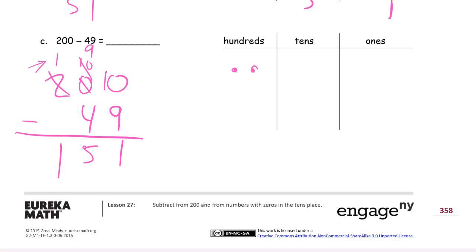2 100s. I break up that 100 and I get 10 tens. One, two, three, four, five, six, seven, eight, nine, ten. And I can break up a 10 and get ones. One, two, three, four, five, six, seven, eight, nine, ten. And now I can cross out.